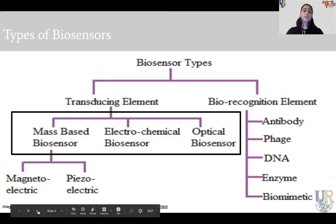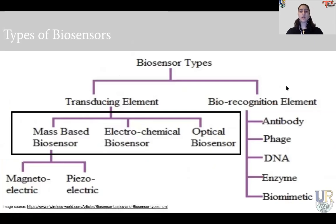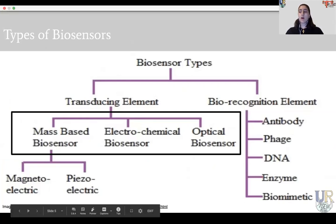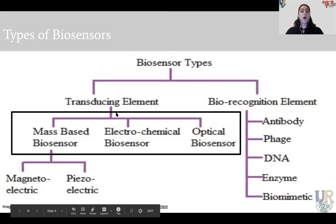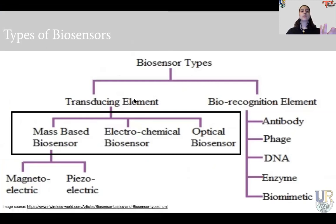As mentioned earlier, there are two parts to a biosensor. First is the biorecognition element — such as an antibody, a phage, DNA, an enzyme, or biomimetics. Then there is the transducing element, which is our sensor.